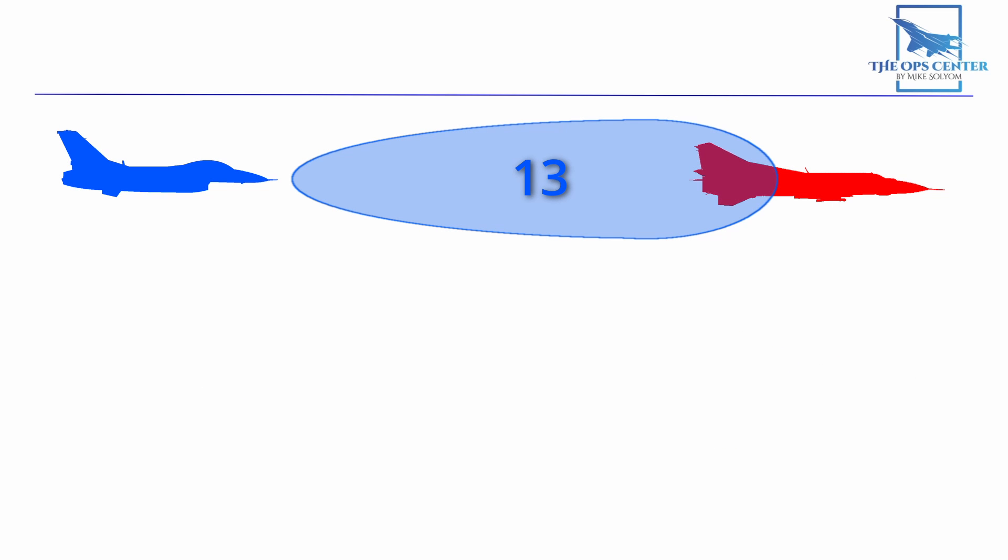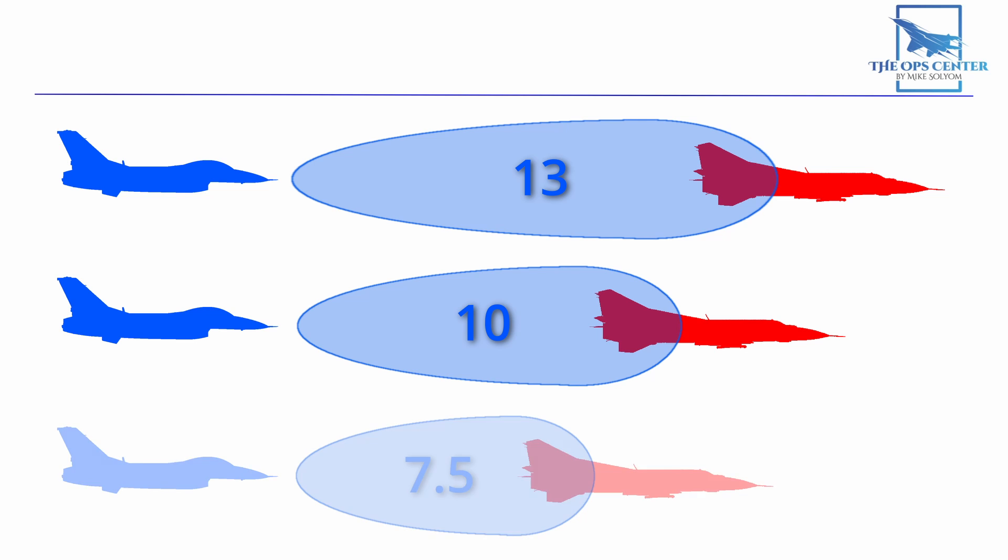In our example, when we had the same two aircraft flying at the same speed and aspect, but now flying at 20,000 feet, the range of the WEZ dropped. That stern WEZ shrank to just 10 miles. And when we moved down to 10,000 feet, that dropped even further to 7.5 miles.